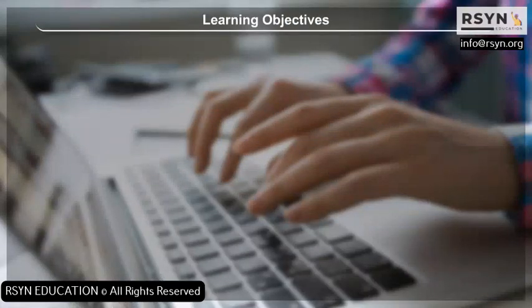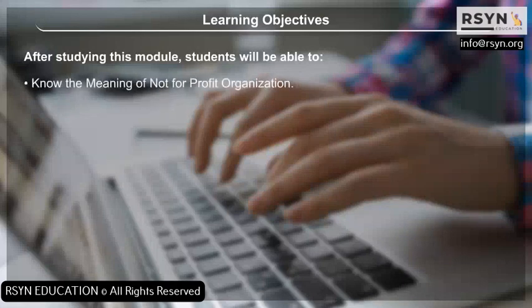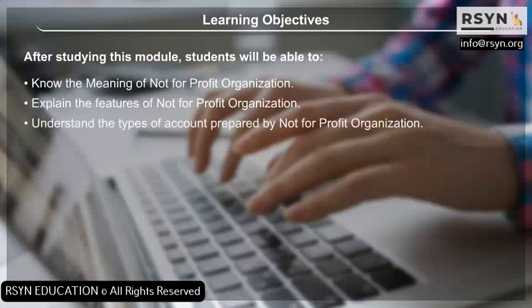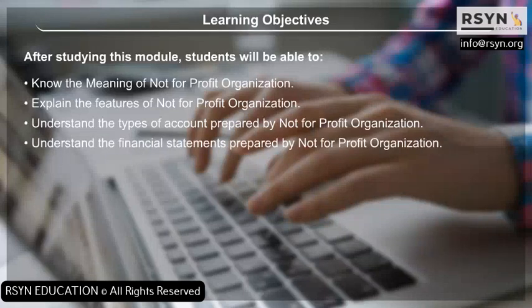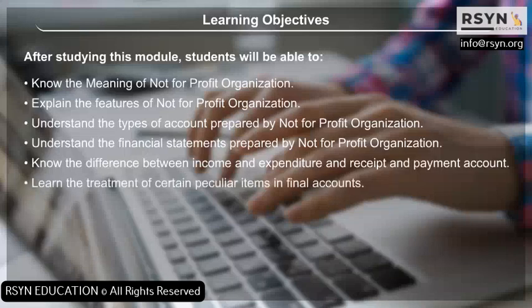Learning Objectives: After studying this module, students will be able to know the meaning of not-for-profit organization, explain its features, understand the types of accounts prepared by not-for-profit organizations, understand the financial statements prepared by them, know the difference between income and expenditure and receipt and payment account, and learn the treatment of certain peculiar items in final accounts.